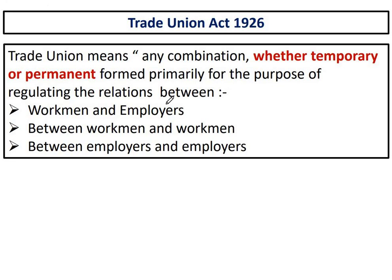According to the Trade Union Act 1926, trade union means any combination, whether temporary or permanent, formed primarily for the purpose of regulating the relation between workmen and employers — जो workers हैं और जो employers हैं उनके बीच अच्छी relation को maintain करने के लिए — या between workmen and workmen, या between employers and employers. So trade union means any combination whether temporary or permanent formed primarily for the purpose of regulating the relations between workmen and employer, between workmen and workmen, and between employers and employers.